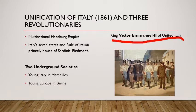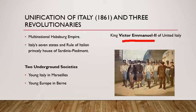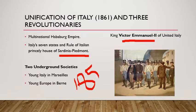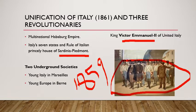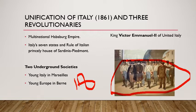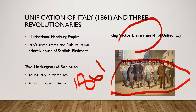Count Camillo de Cavour led the movement to unify the regions of Italy through a tactful diplomatic alliance with France. Engineered by Cavour, Sardinia became successful in defeating the Austrian forces in 1859. Apart from regular troops, a large number of armed volunteers under the leadership of Joseph Garibaldi joined the fray in 1860. They marched into South Italy and the Kingdom of Two Sicilies and succeeded in winning the support of the local peasants to drive out the Spanish rulers. In 1861, the process of unification of Italy was completed and Victor Emmanuel II was proclaimed King of United Italy.